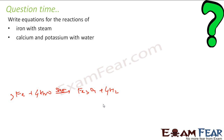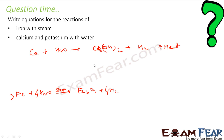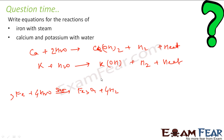Calcium plus water gives Ca(OH)2 plus H2 plus heat. To balance: Ca is 1 on each side; oxygen is 2, so use 2 water molecules; hydrogen becomes 4 on each side — balanced. For potassium: K plus water gives KOH plus H2 plus heat. Hydrogen is 3 on the right and 2 on the left, so multiply through by 2: 2K + 2H2O → 2KOH + H2. Now all atoms are balanced.